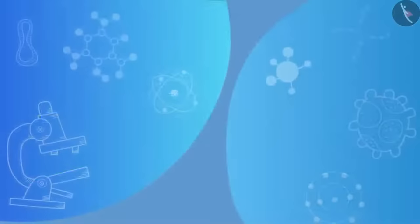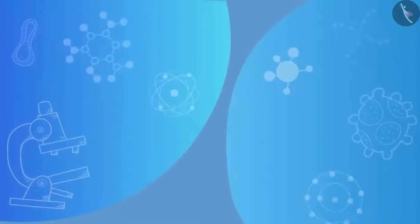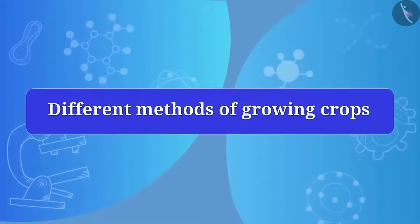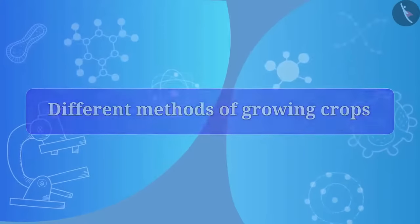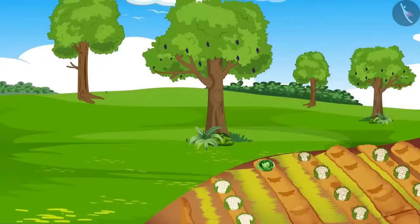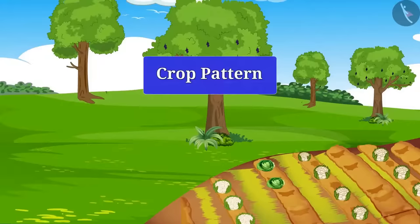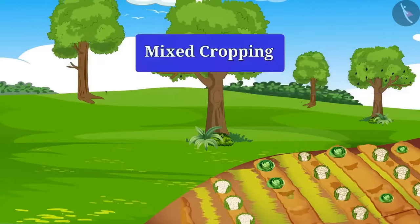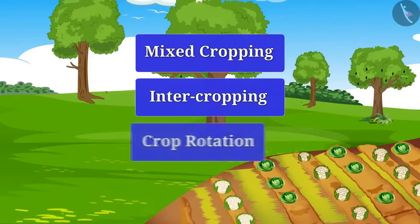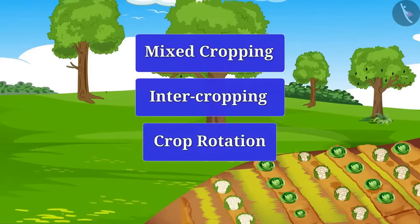Friends, do you know that crop production can be increased by using different methods of growing crops? Let's know how. Crop production can be increased by using different crop patterns. For example, mixed cropping, intercropping, crop rotation. Let us know about these methods in detail.